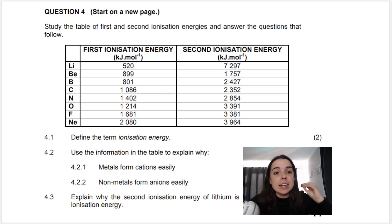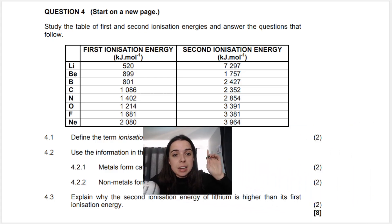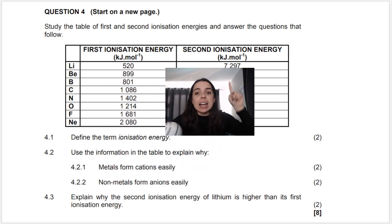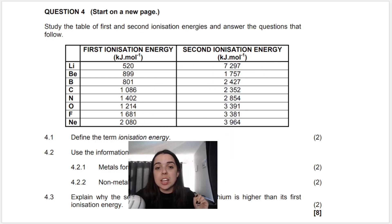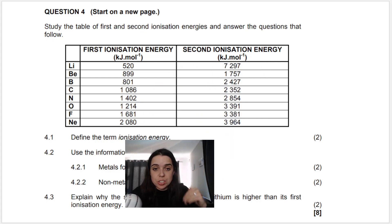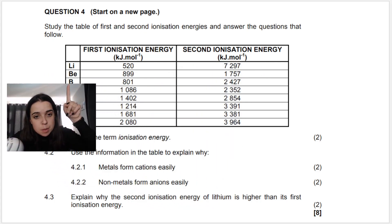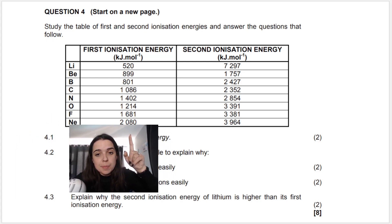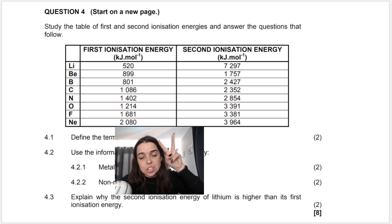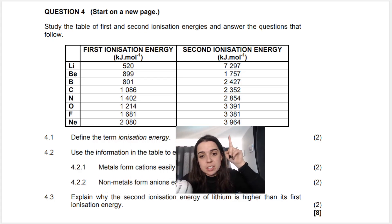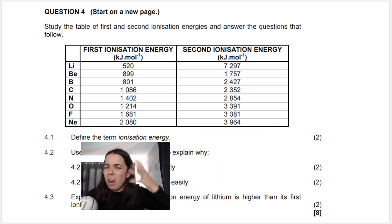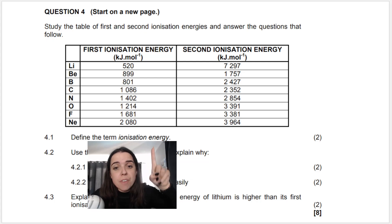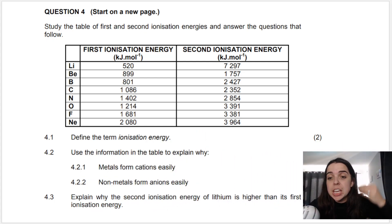We've got a table here that says study the table of first ionization energies and second ionization energies and answer the questions that follow. You'll see that there are elements listed on the table alongside two ionization energies, first and second. First things first, what is ionization energy? That is my first question: define the term ionization energy.